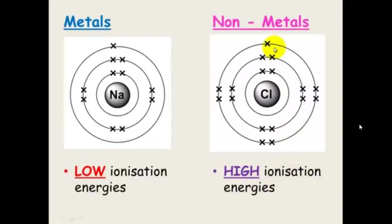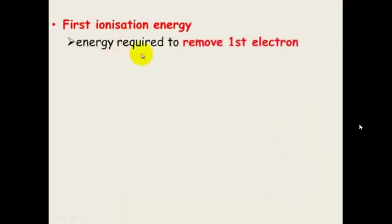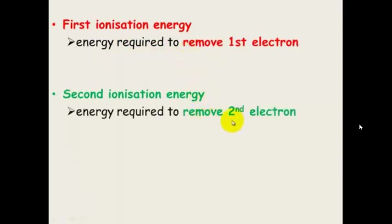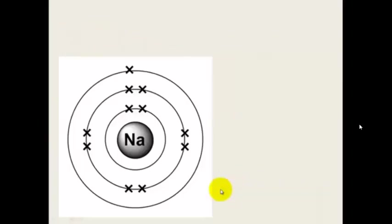Chlorine wants to gain an electron, not lose one, so to pull an electron away requires a high amount of energy. We can describe ionisation energy as first ionisation energy — the energy required to remove the first electron — second ionisation energy, which is the energy to remove the second electron, or third ionisation energy, which is the energy required to remove a third electron. This changes depending on what element we are looking at.